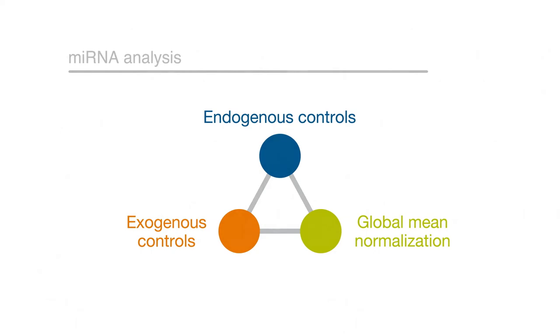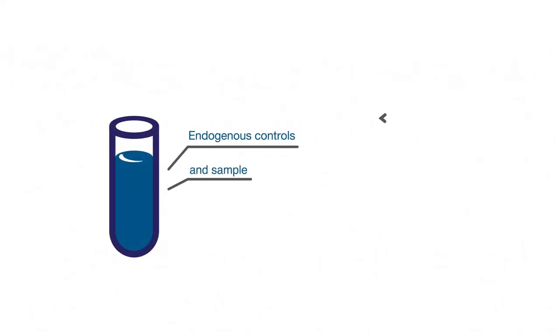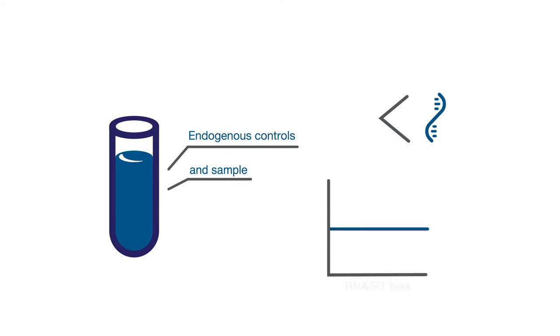Normalization using endogenous control genes is currently the most accurate way to correct for potential differences in RNA input or reverse transcription efficiency bias. The ideal endogenous control gene provides relatively consistent and moderately abundant expression across a variety of tissues, cell types, and treatments. MicroRNAs that are uniformly expressed can be used as endogenous controls. Several microRNAs have been shown to be expressed at relatively constant levels across many different tissue types.